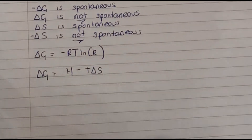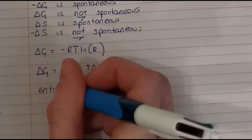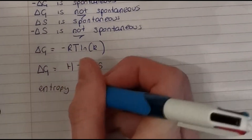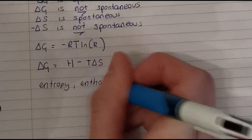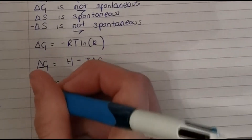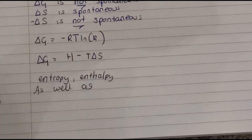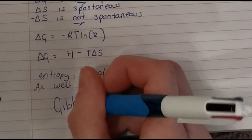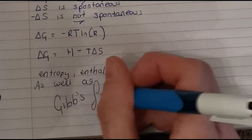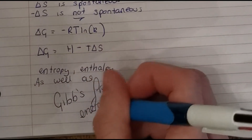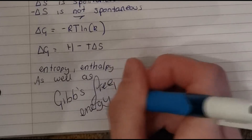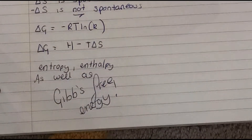Delta G equals minus RT and ln K. Delta G equals H minus T delta S system — entropy, enthalpy — as well as gives free energy.